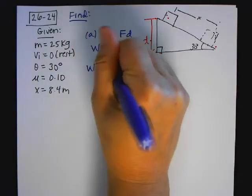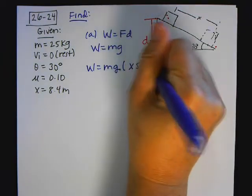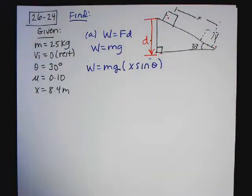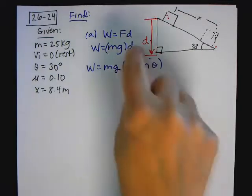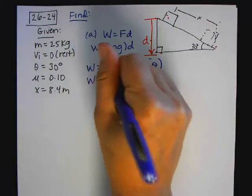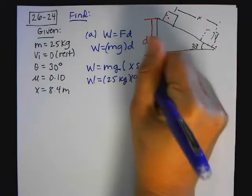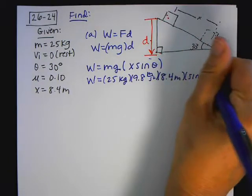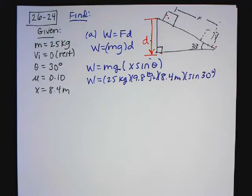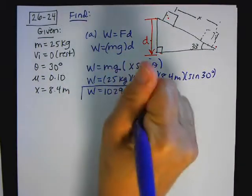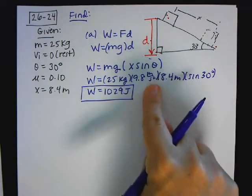Therefore, W equals mg times x times sine of theta. This D is x·sin(θ). Substituting values: 25 kg times 9.8 m/s² times 8.4 meters times sine of 30 degrees. When I put all that in my calculator, I get 1029 joules. A kilogram·meter/s² is a newton, and a newton times a meter is a joule.